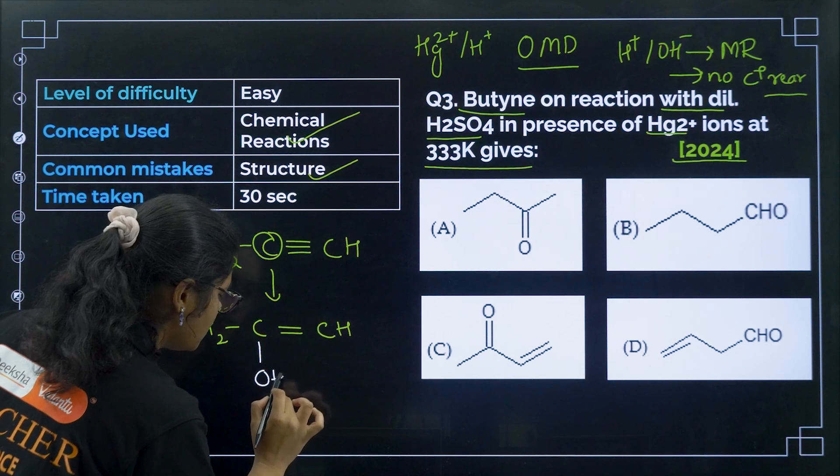Question 7: by which reaction can benzaldehyde NOT be prepared? Toluene with CrO₂Cl₂ in CS₂ and H₃O⁺ is the Etard reaction — possible. Benzoyl chloride with H₂ is the Rosenmund reaction — possible. Benzene with CO and HCl in anhydrous AlCl₃ — also possible. But benzene with Zn, Hg and concentrated HCl will not give benzaldehyde. Correct answer is option number D.